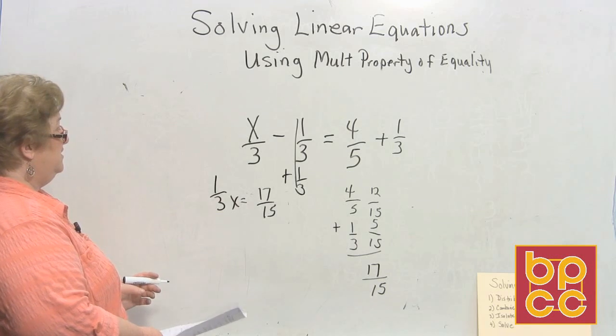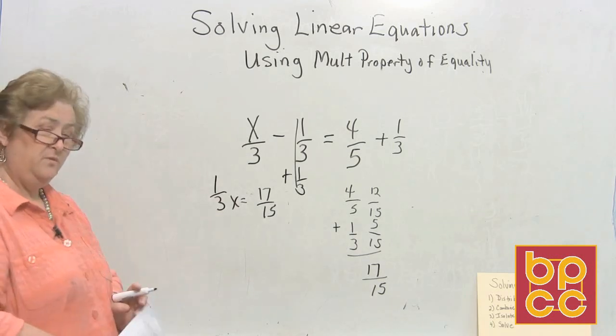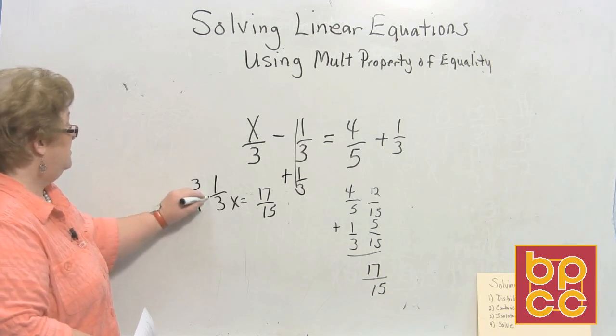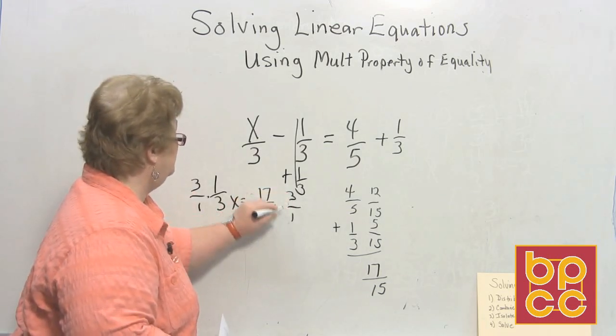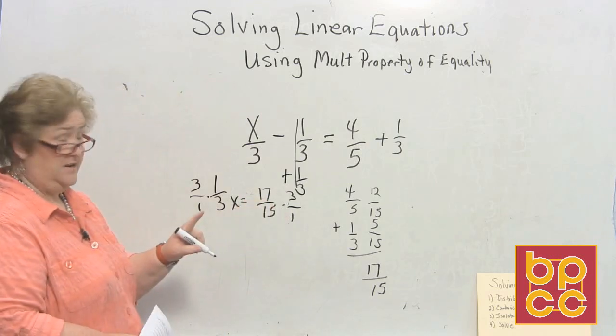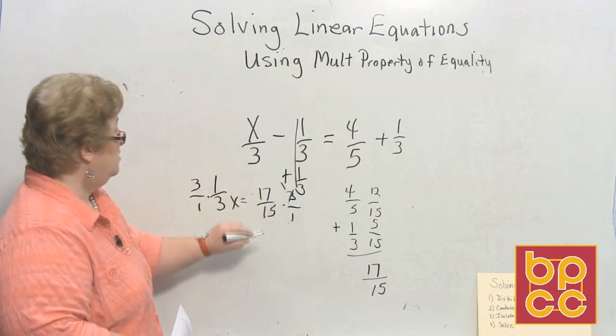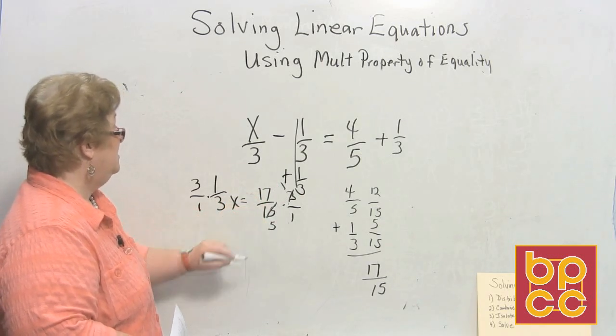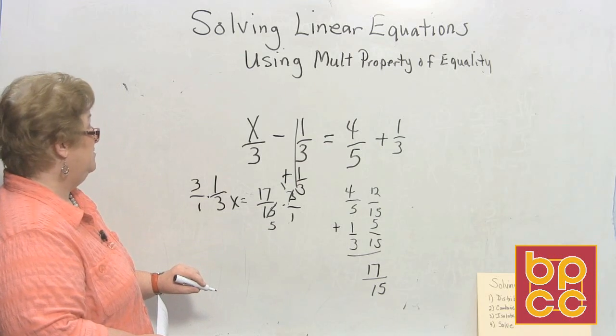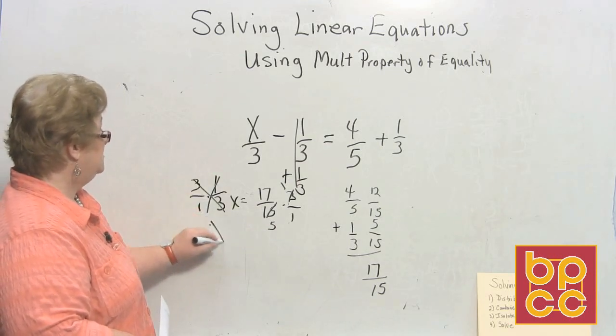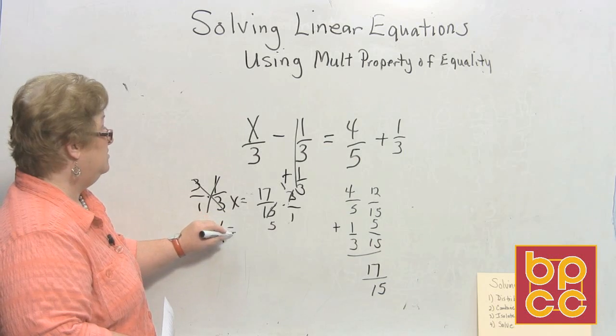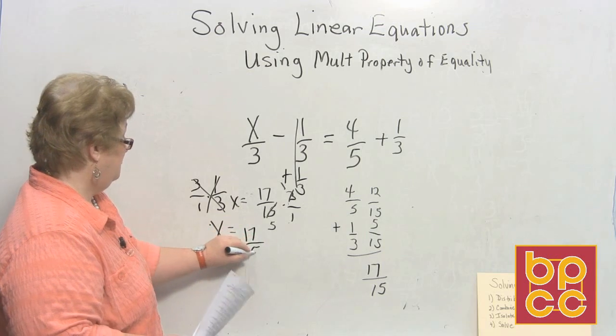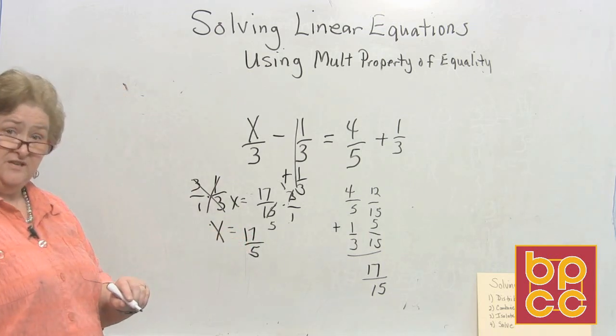Now, what are we going to do? Well, I think we're going to multiply by the reciprocal, aren't we? Here we go. 3 over 1. And over here, we'll do a 3 over 1. I'm definitely going to play cross out here. 3 into 3 is 1 and 3 into 15 is 5. So what do I have now? I have, this crosses out, so I have x equal, looks like 17 over 5. And that is your answer. 17 over 5. You don't have to change it into a mixed number.